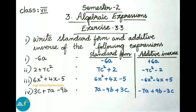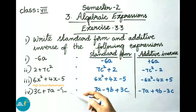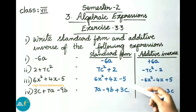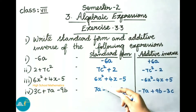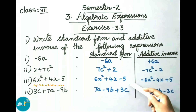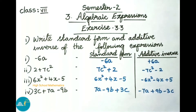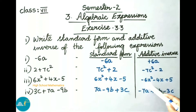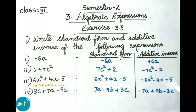See now the third one: 6x square plus 4x minus 5. The given expression is already in standard form, so we write again 6x square plus 4x minus 5. The additive inverse is minus 6x square minus 4x plus 5.